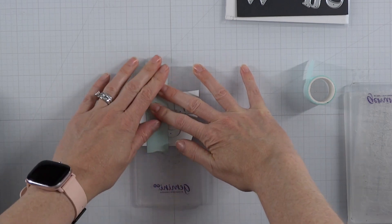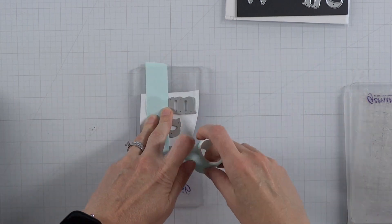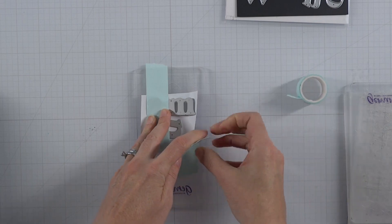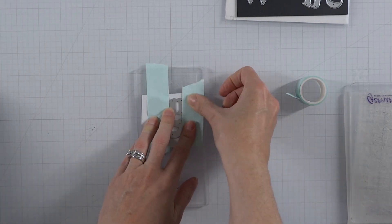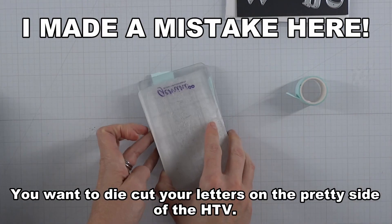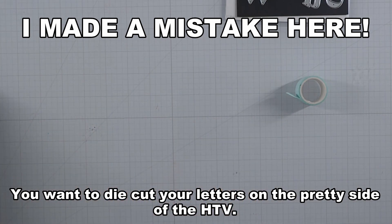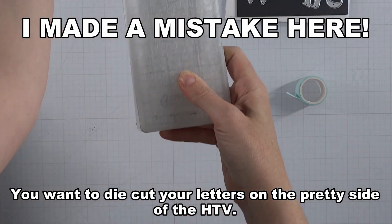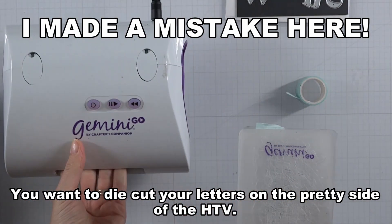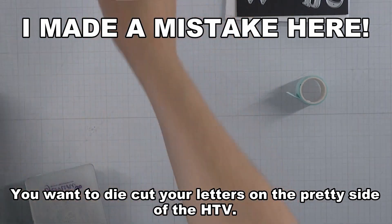Now let's go to the fellow paper crafter out there who might not have a die cutting machine like the Cricut or Silhouette, but does have alphabet sets that we don't use. We need more use for that. That's what we're going to do now. I'm going to run this through my little Gemini Go here.